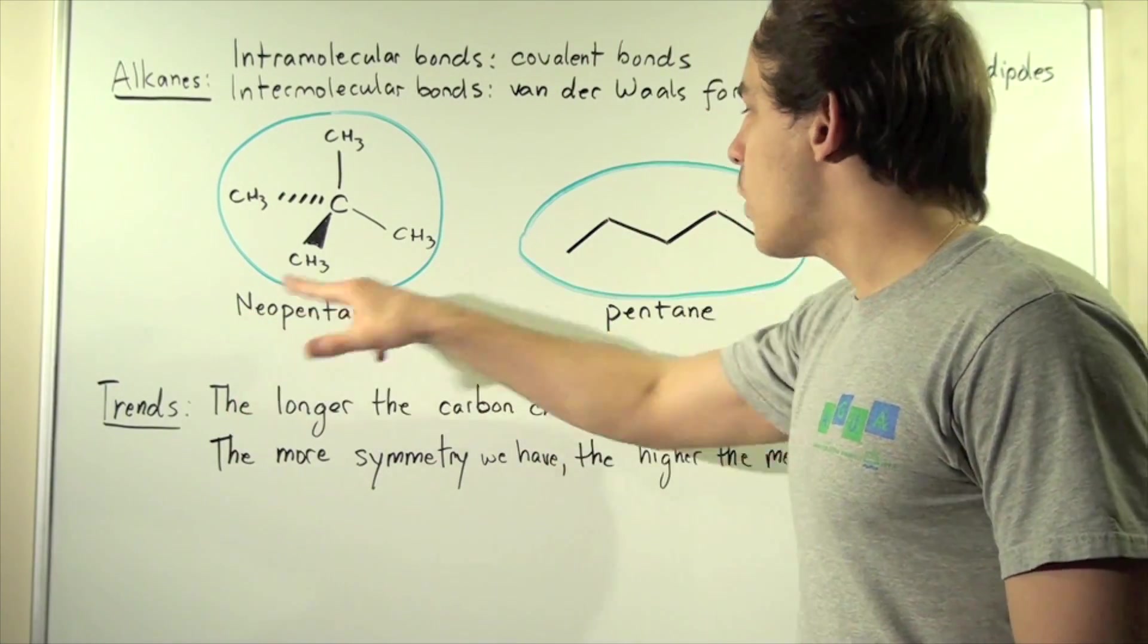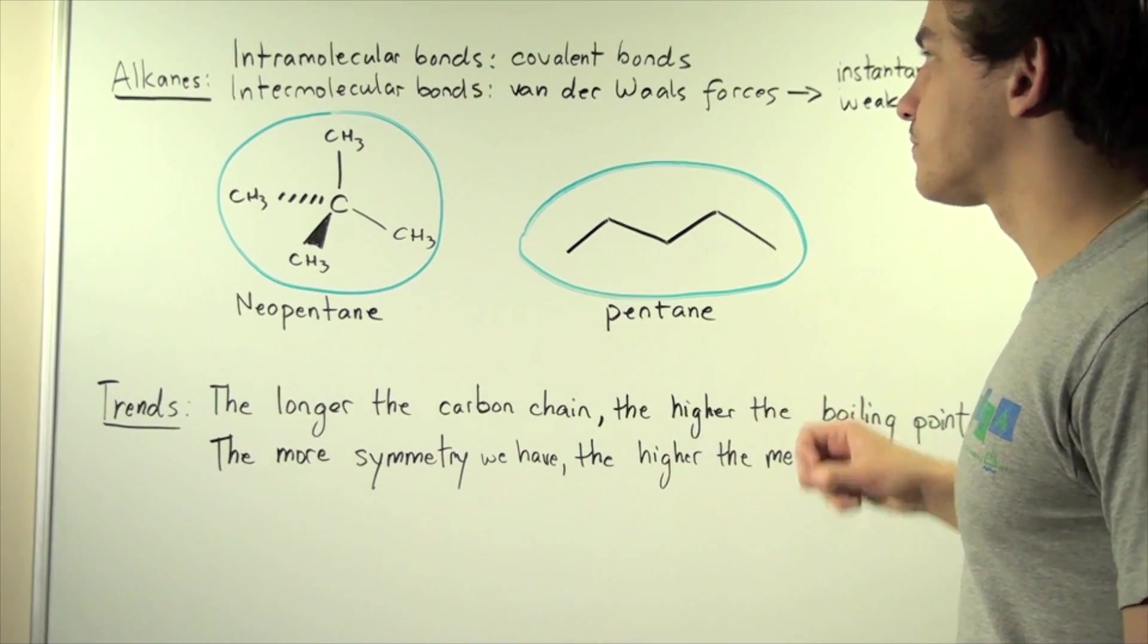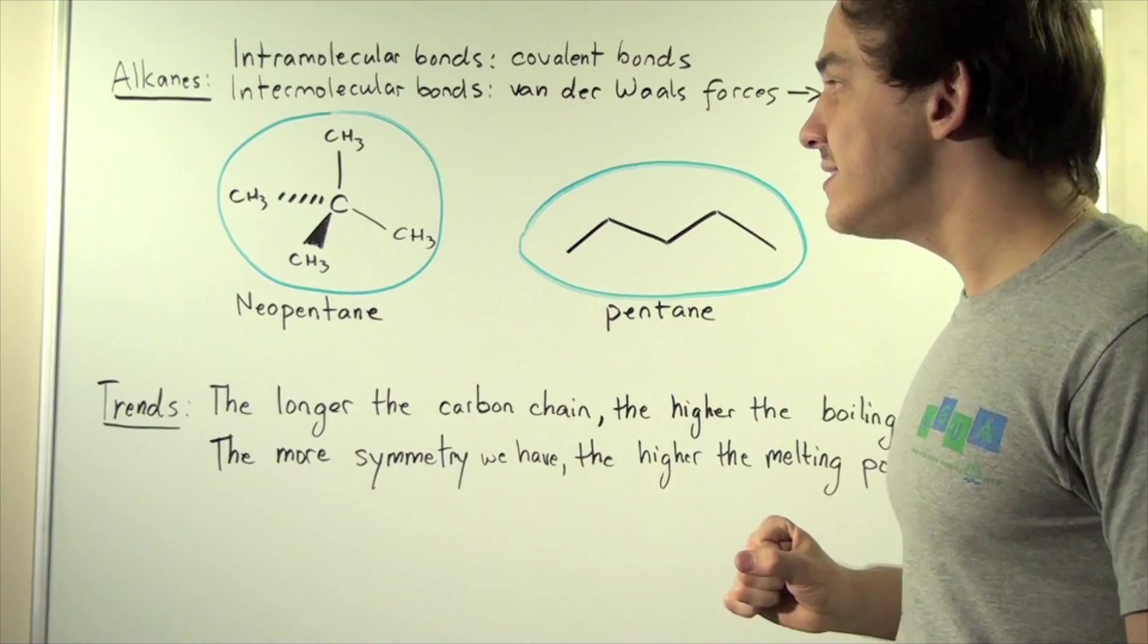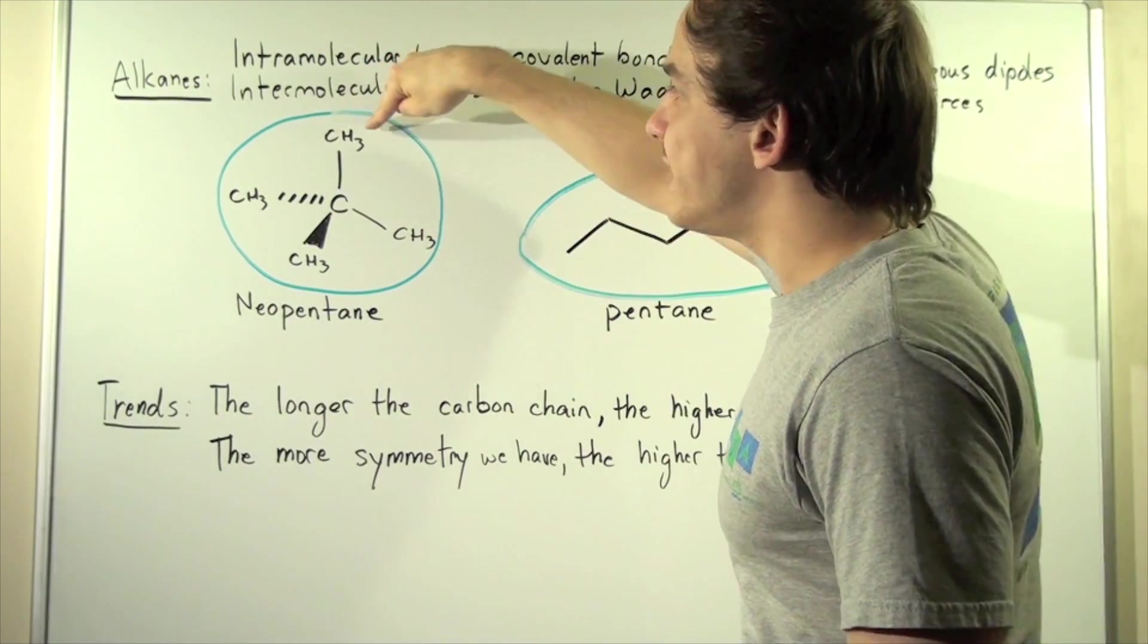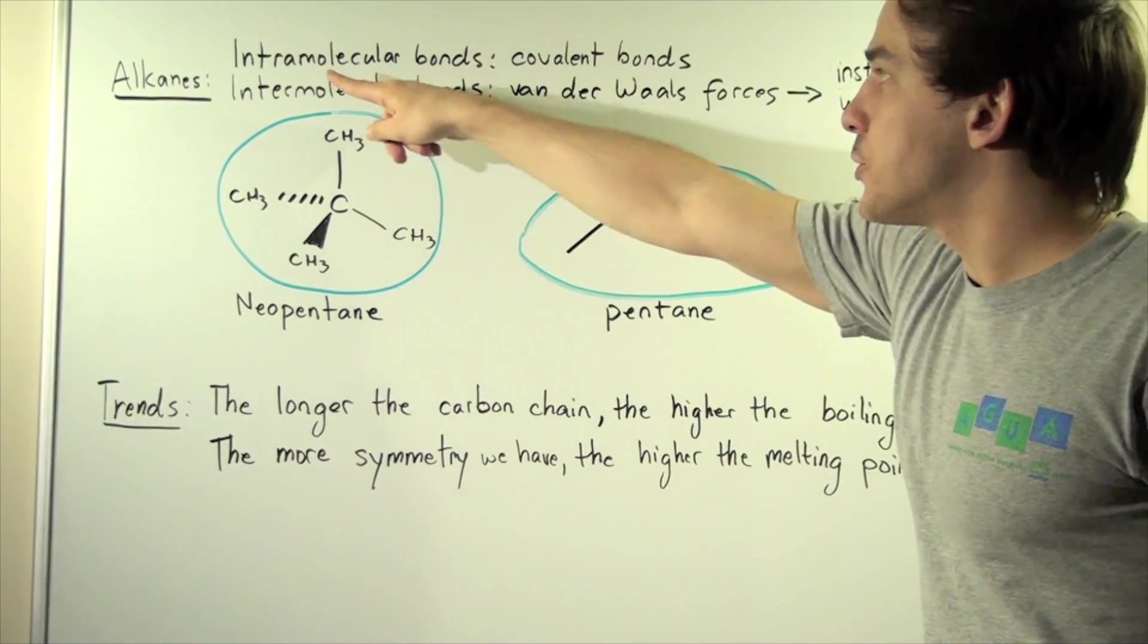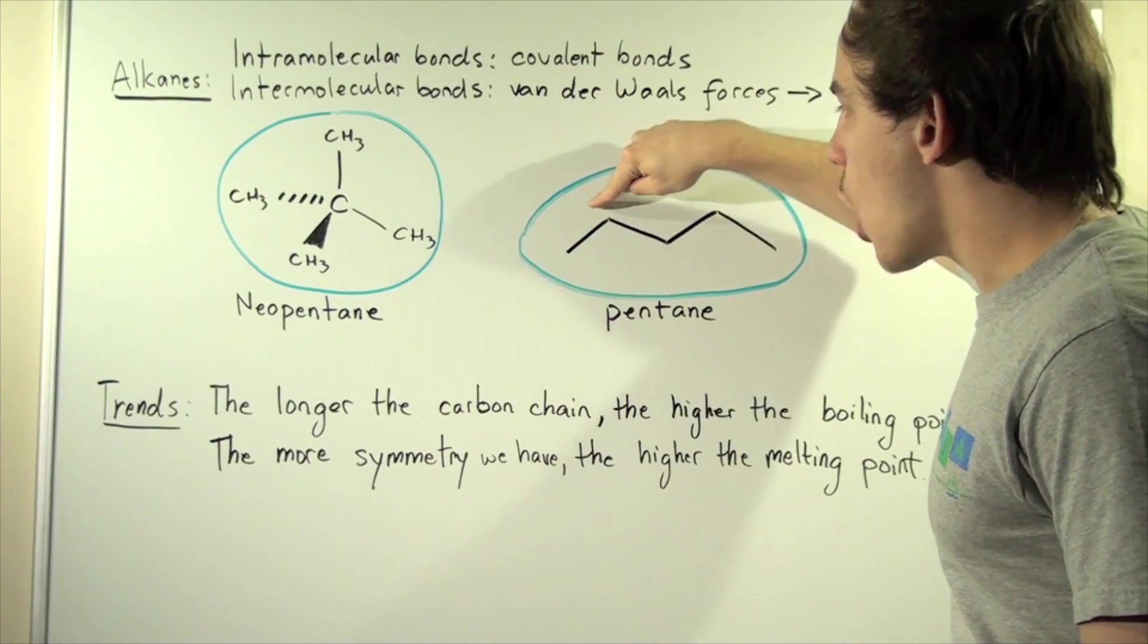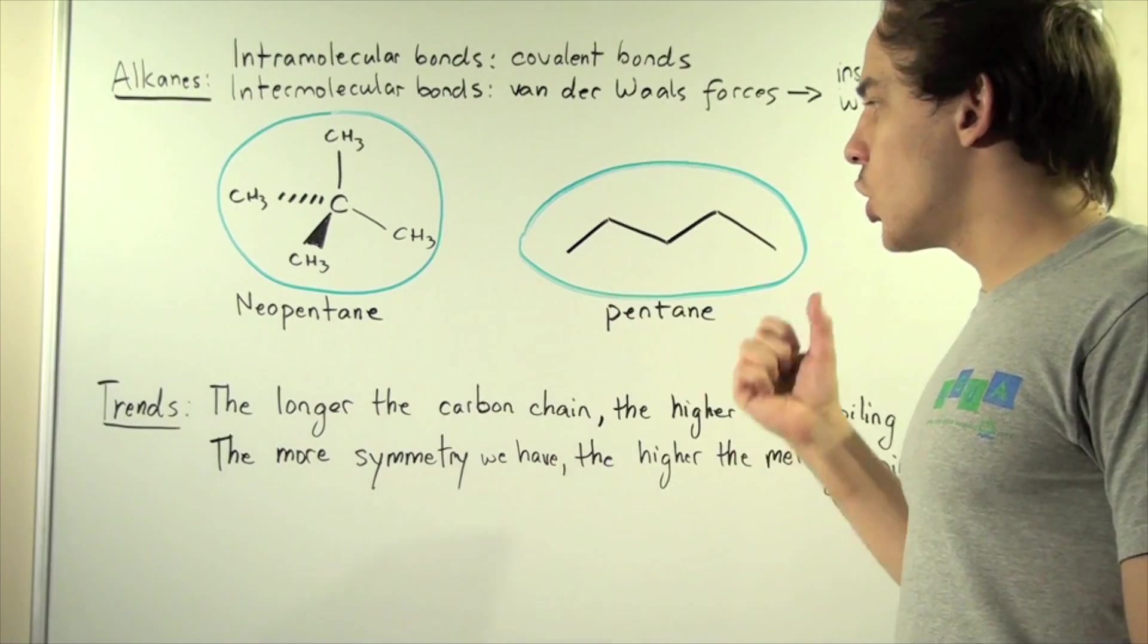Now here we have two alkanes: neopentane and pentane. The intramolecular bonds within neopentane are the carbon-carbon covalent bonds and carbon-hydrogen covalent bonds. Likewise, the intramolecular bonds in pentane are the carbon-carbon covalent bonds and the carbon-hydrogen covalent bonds which aren't shown.